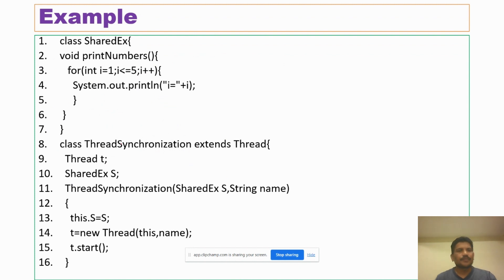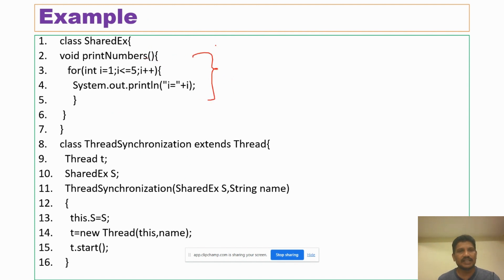Here is an example for synchronization. In this program, the print number method is called the shared resource. This method can be accessed by more than one thread. Let's see what is happening.